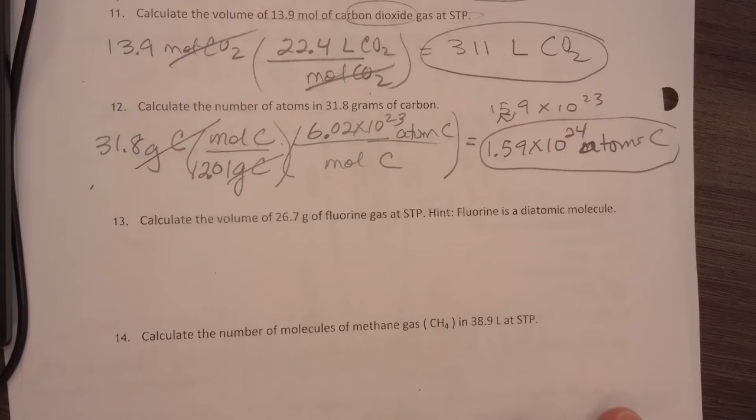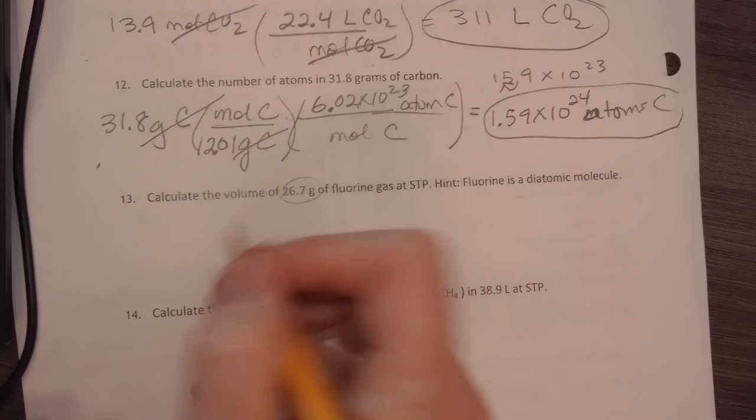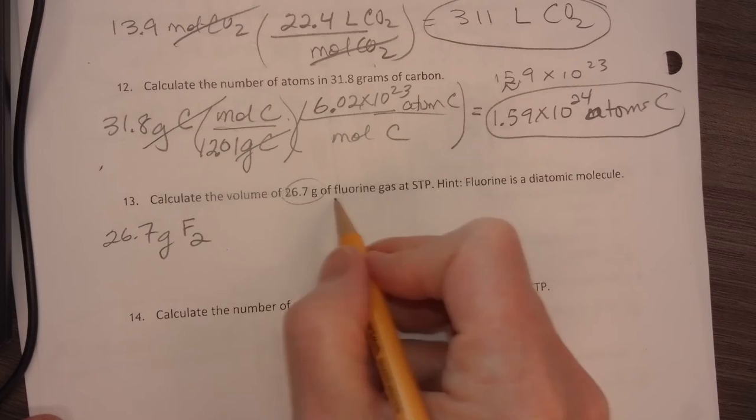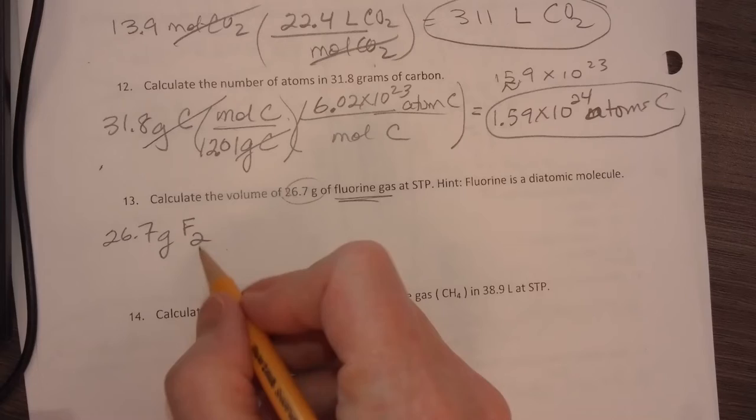Okay. Make sure you have your units. Now it says calculate the volume at STP of 26.7 grams of fluorine gas. Remember, fluorine, halogens are diatomic. Make sure you remember that on the final.